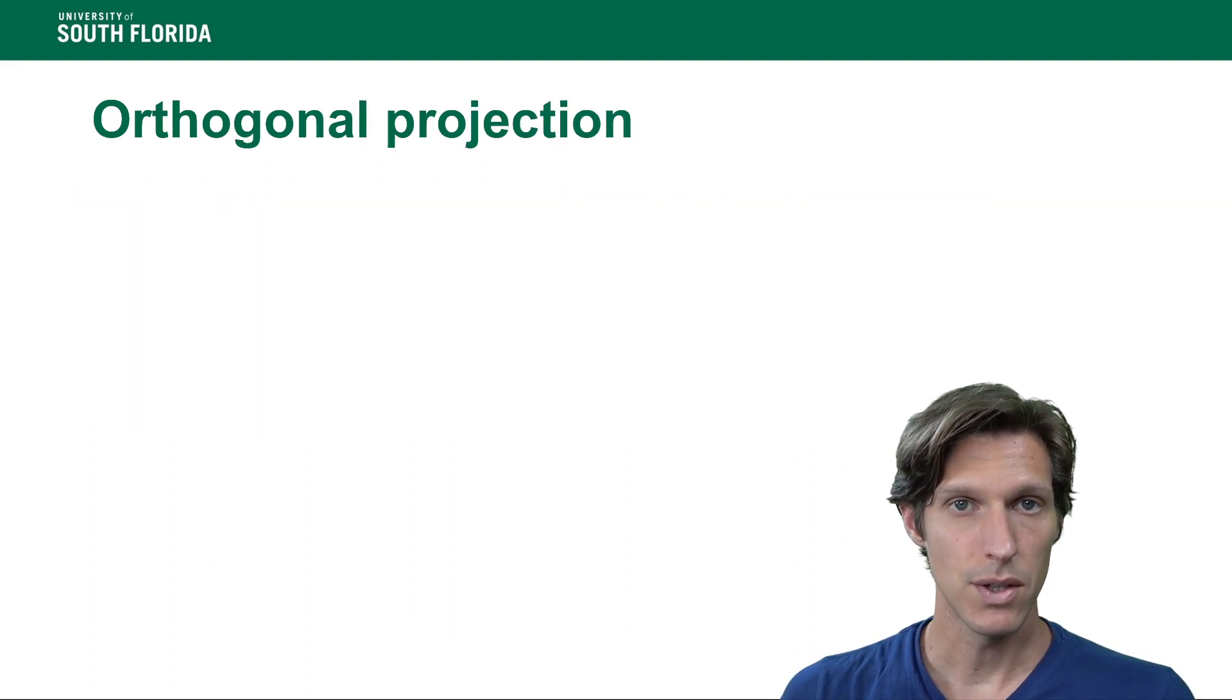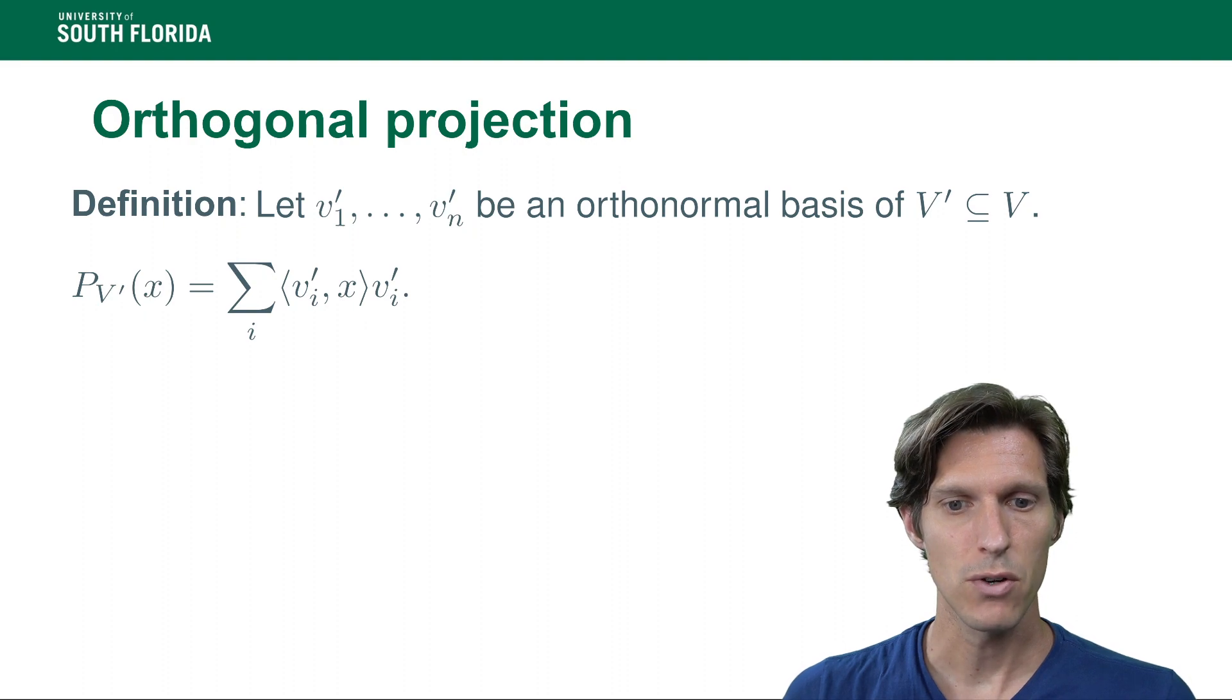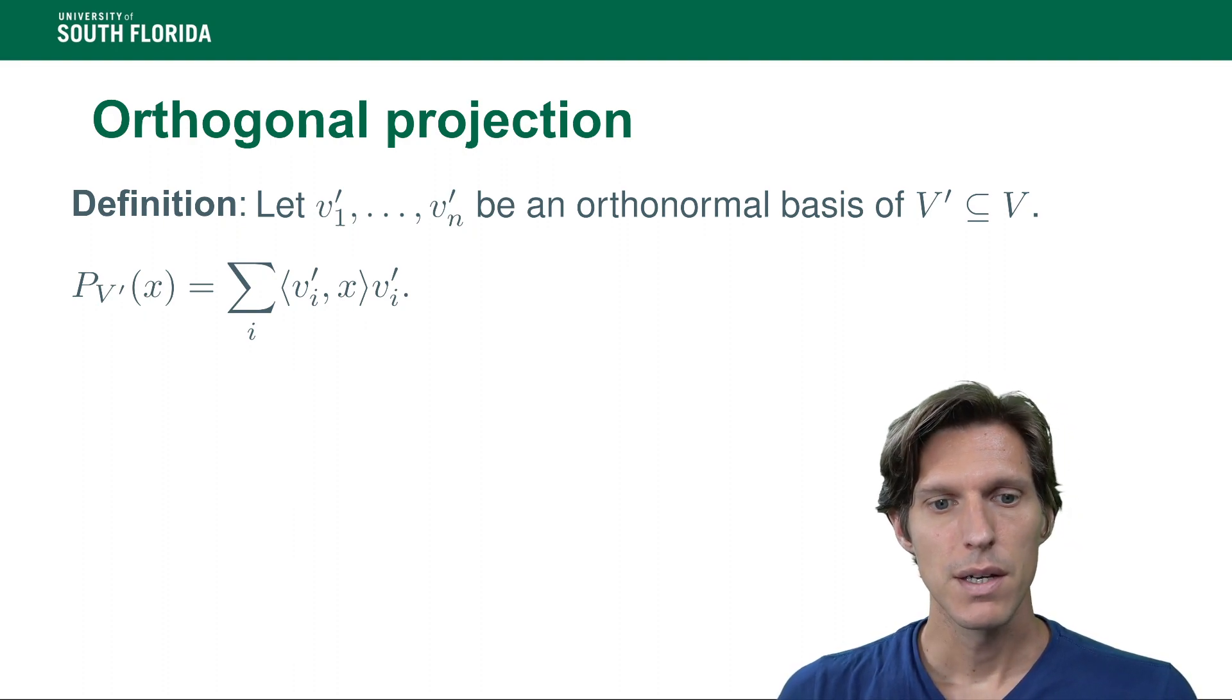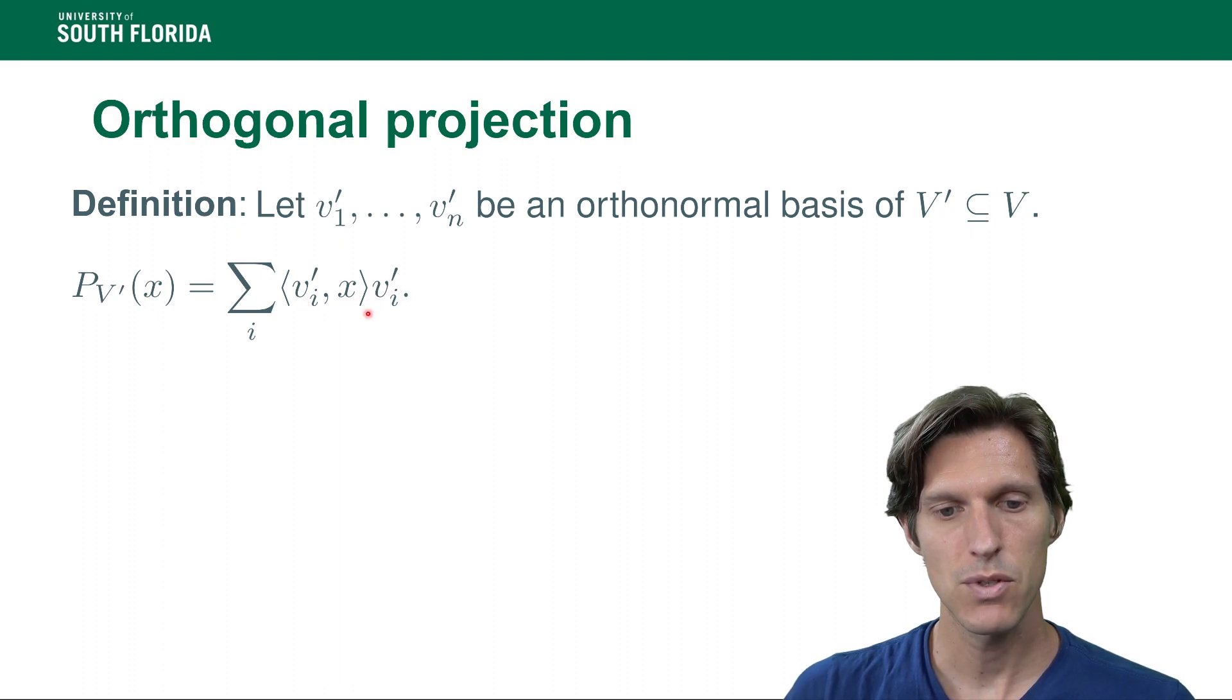Now the algorithm that we're going to be using relies a lot on orthogonal projections. So what's an orthogonal projection? Assume you already have an orthonormal basis. Then an orthogonal projection maps x to the sum of inner products between the basis vector and x times those basis vectors.